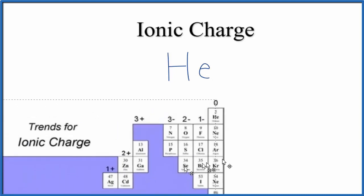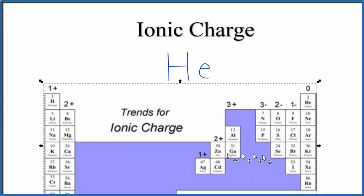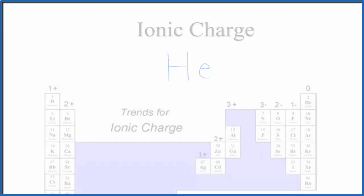I recommend that you memorize these trends on the periodic table for ionic charge, but you also understand what's going on, why something like helium doesn't have an ionic charge, or something like hydrogen will give away one electron and have a 1+ ionic charge. This is Dr. B with the ionic charge for helium, He, and thanks for watchin'.